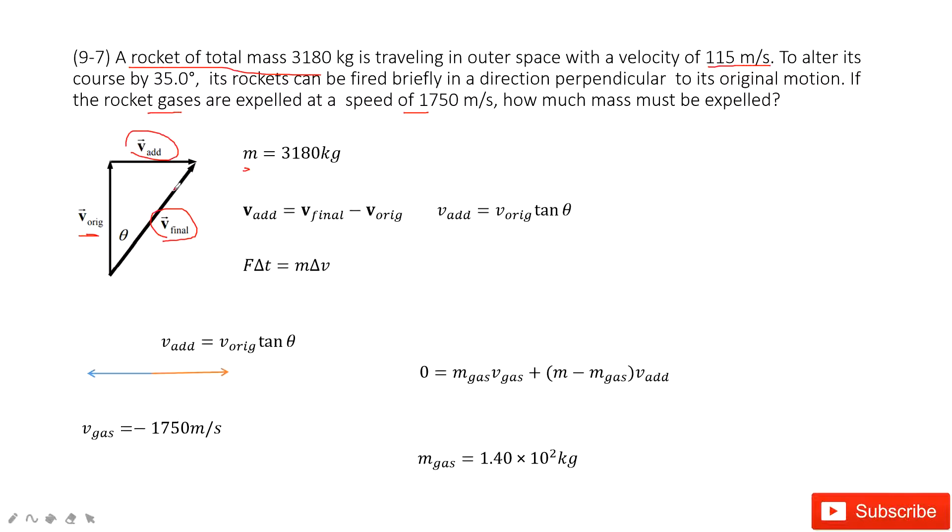So first of all, we can consider this as the addition of vectors. So of course, V_original plus V_added equals V_final. So in this way, we can find V_added, the velocity added. It's just V_original times tangent theta.